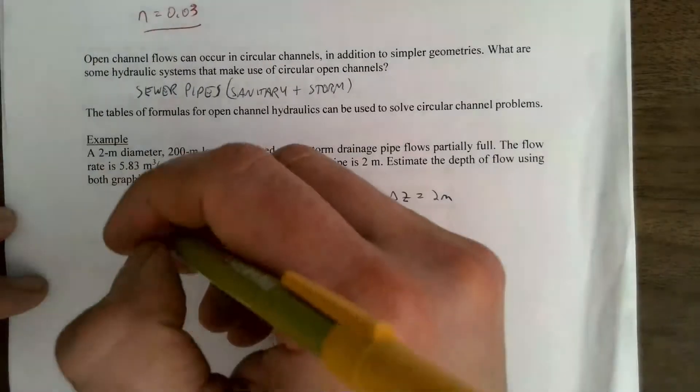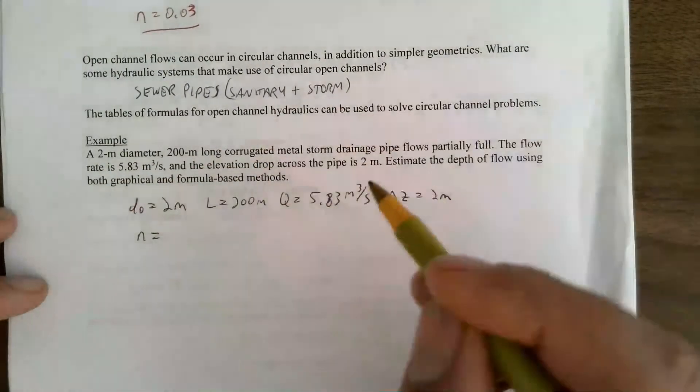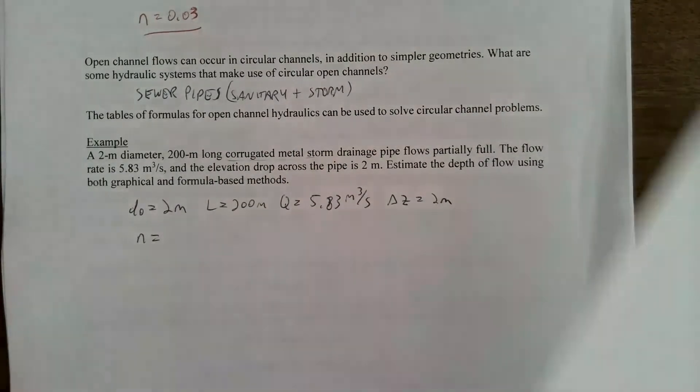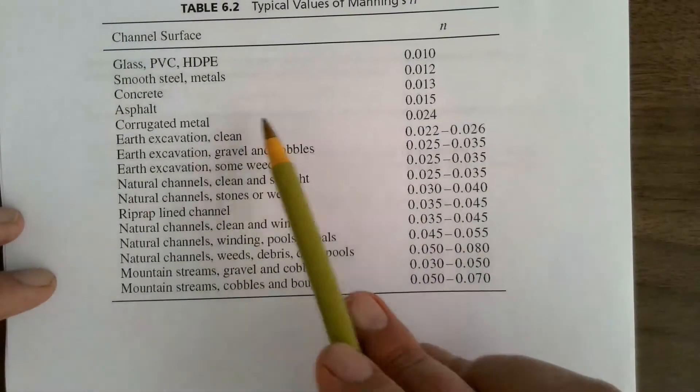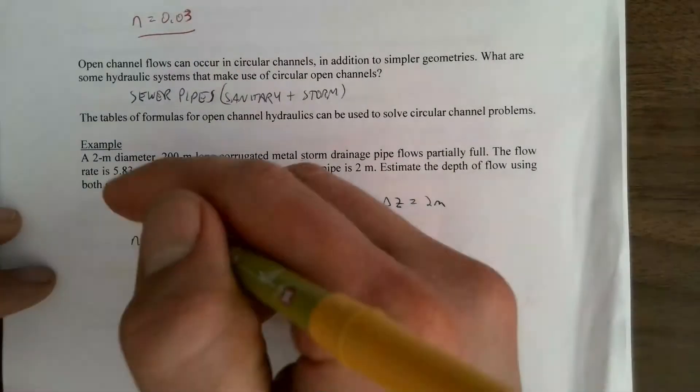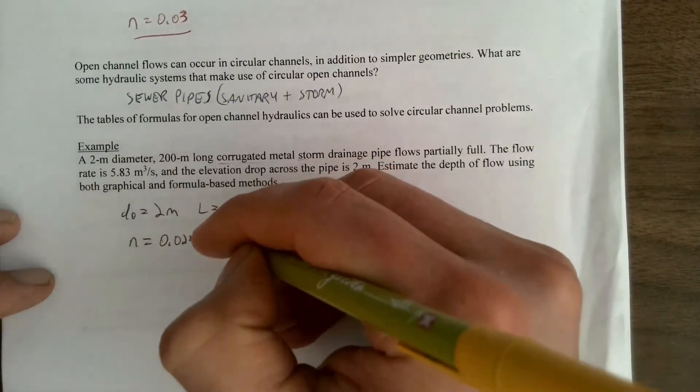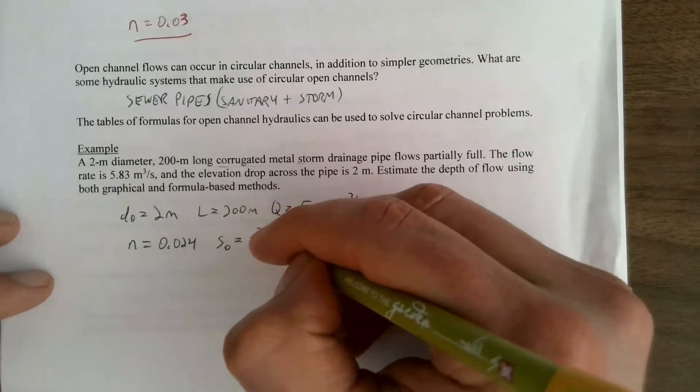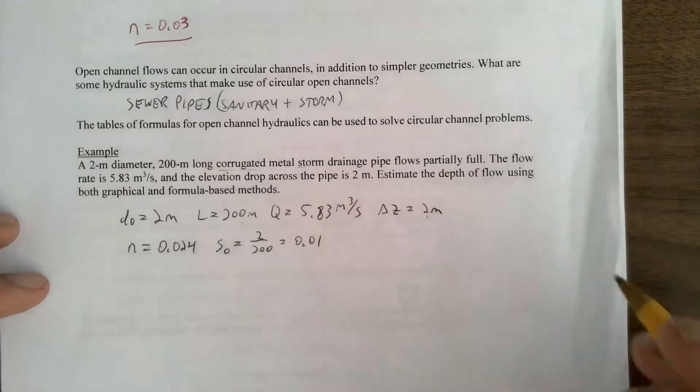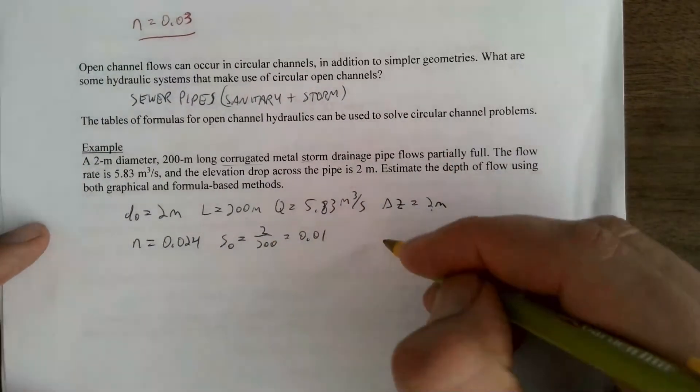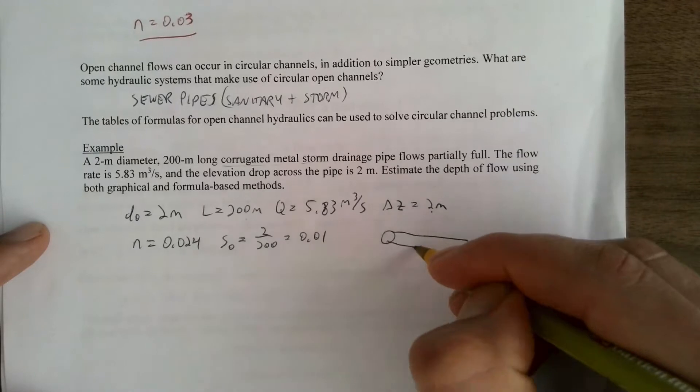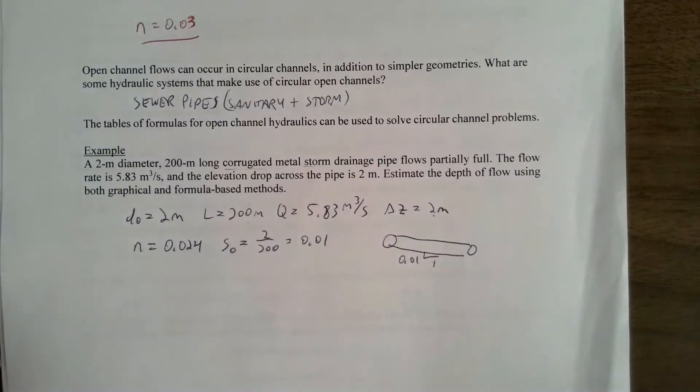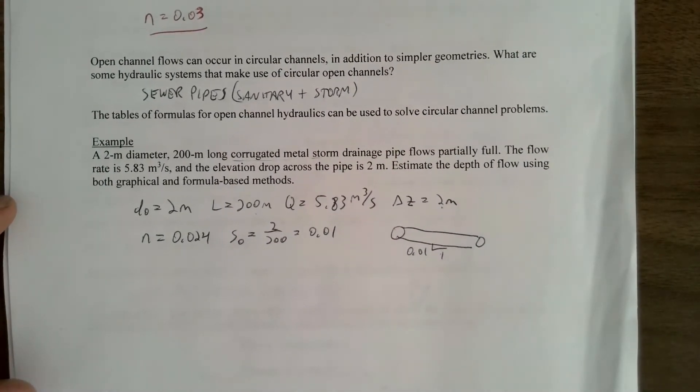To use Manning's equation, we're going to need a value for N. Corrugated metal pipe, we can go look this up in the table of supplemental values here. Corrugated metal N is 0.024. And then we're also going to need the slope. We're given the drop and the length. So, slope is 2 over 200, which is 0.01. That's the slope from one end of the pipe to the other. So, we've got this circular pipe and it is on a 0.01 to one slope.